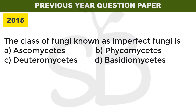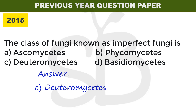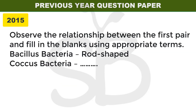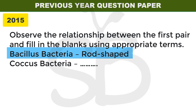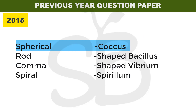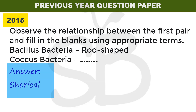2015 exam: the class of fungi known as imperfect fungi is Deuteromycetes. 2015 improvement exam: Bacillus bacteria are rod-shaped; Coccus bacteria are dash — the answer is spherical. Bacteria are classified by shape: spherical is Coccus, rod-shaped is Bacillus, comma-shaped is Vibrio, and spiral-shaped is Spirillum.